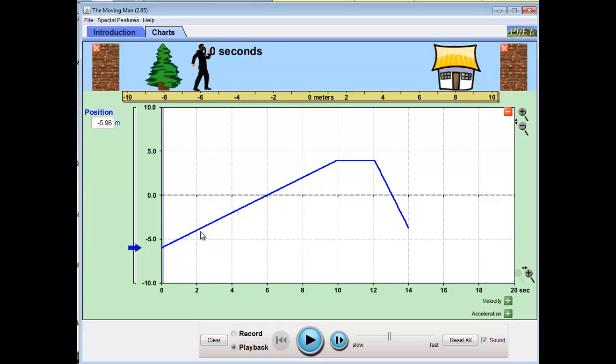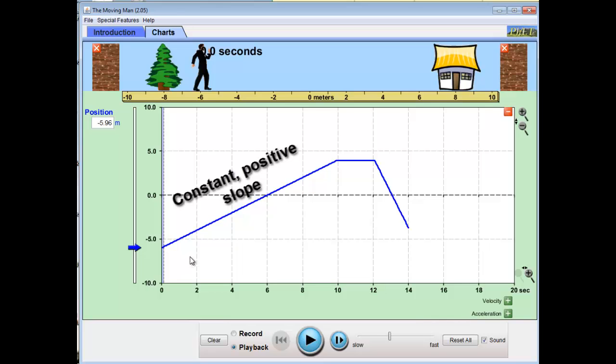Now, we can also see that the slope of this line between 0 and 10 seconds never changes. It's always the same steepness all the way through. So not only is the slope positive, slanting from lower left to upper right, it's also constant. So we would describe this first region as a constant positive slope. And remember, on a position time graph, slope is velocity. So between 0 and 10 seconds, he has a positive constant velocity.